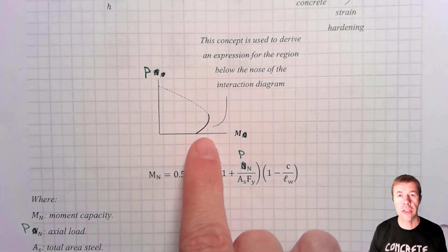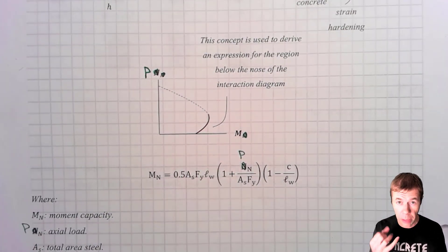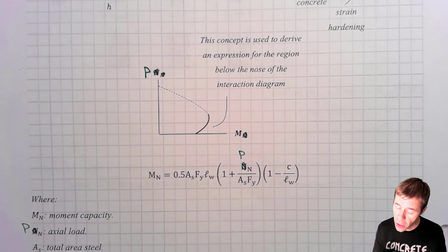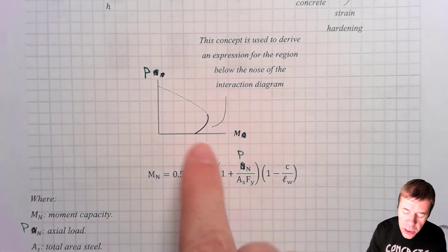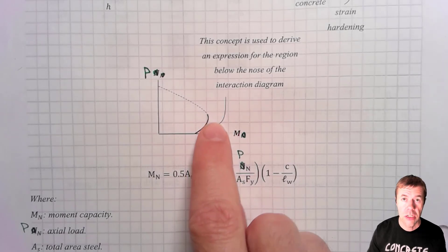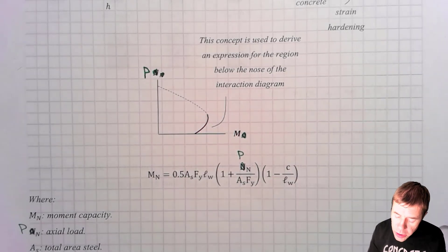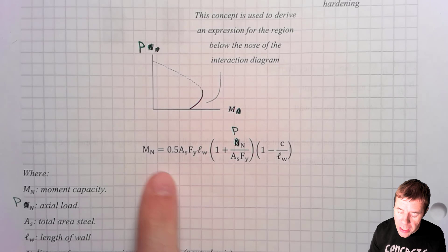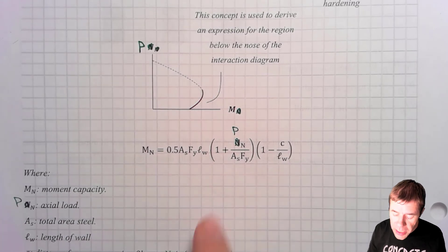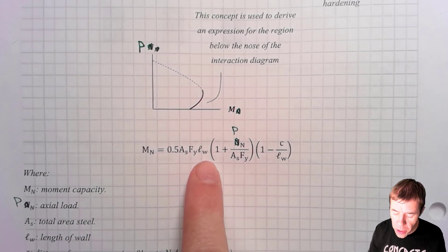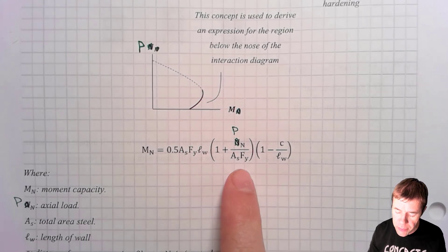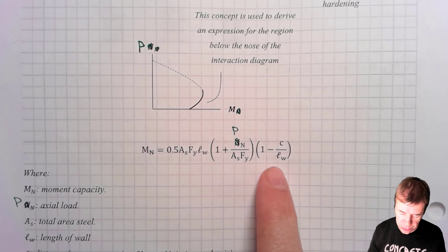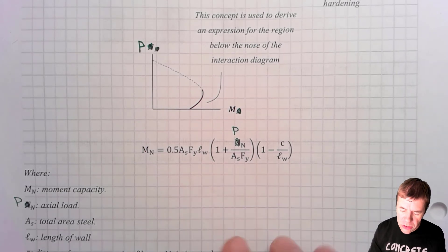In this concept, we're going to derive a part of the interaction diagram. If you haven't seen interaction diagrams before, you should check out my other videos on them. This is the axial load over here. This is the moment over here. And we're going to be just drawing this part. And to do that, we're going to use this equation. MN equals half the area of steel times FY times L sub W times one plus this piece of N over ASFY times one minus C over L sub W. What is all this stuff?